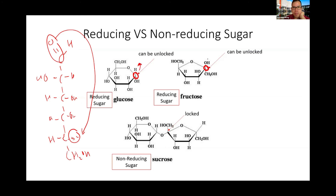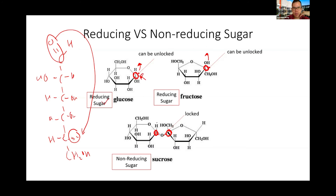For sucrose, which is a disaccharide — two monosaccharides joined together — they join at the anomeric carbon, which means that opening part is locked by the glycosidic bond. Once locked, it cannot open back up for reactions. If the sugar can still open back up, we call it a reducing sugar. If it is locked and cannot open, we call it a non-reducing sugar — like sucrose.